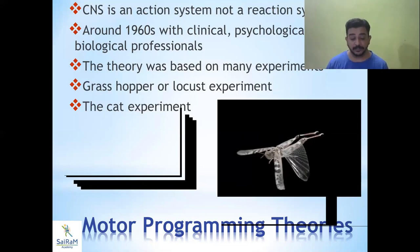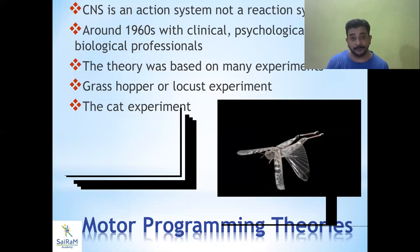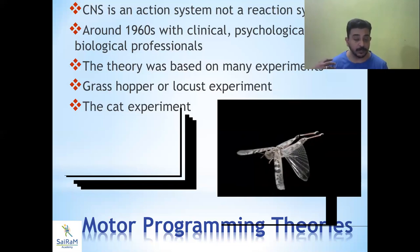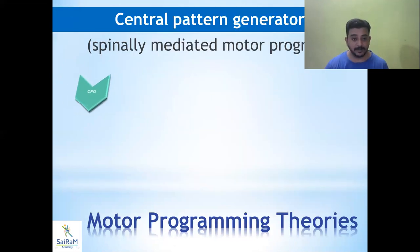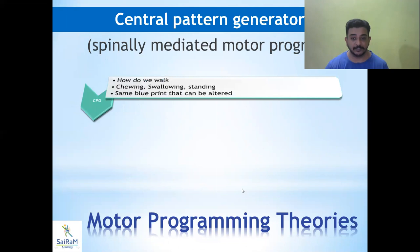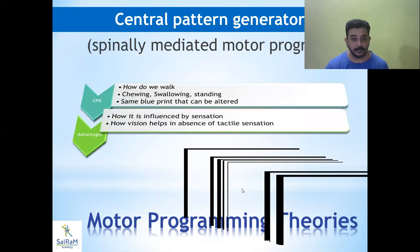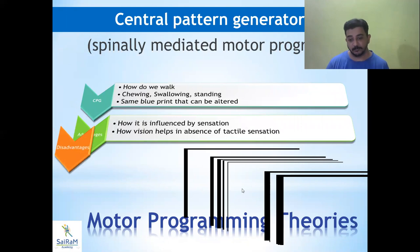That was a fascinating finding — it proved that sensory inputs are not always necessary for movement. In that same cat, the discharge from the brain to the spinal cord was also cut, and still the same movement existed. So the brain also does not have direct influence on these movements. These movements are produced by a mechanism called central pattern generators, which are essentially a spinally mediated motor program.